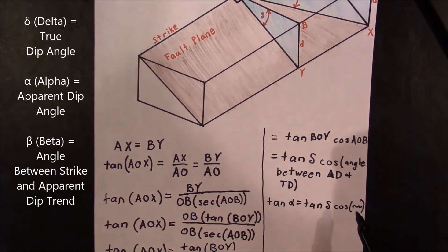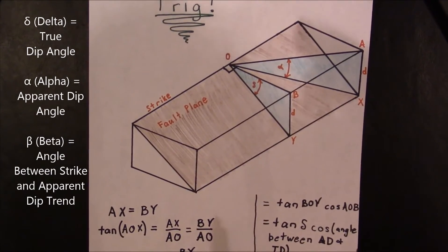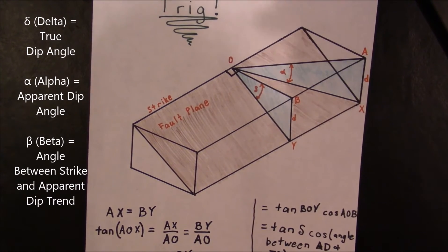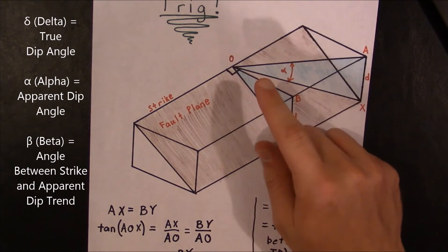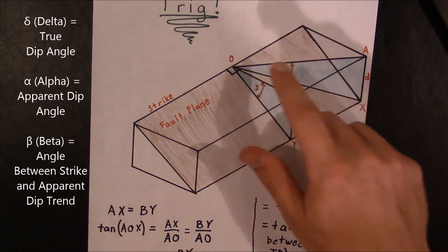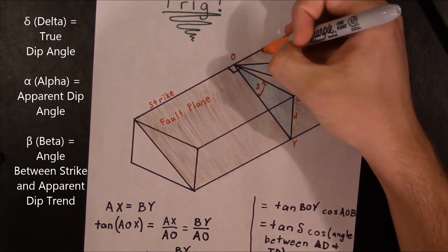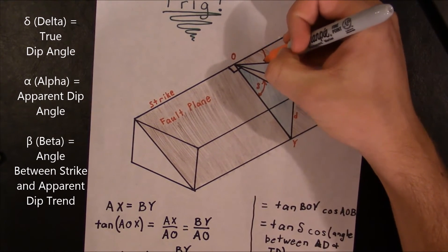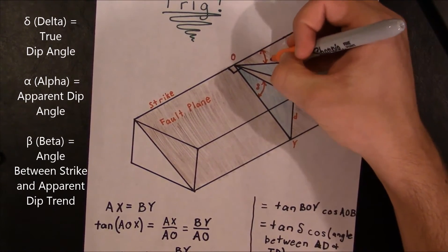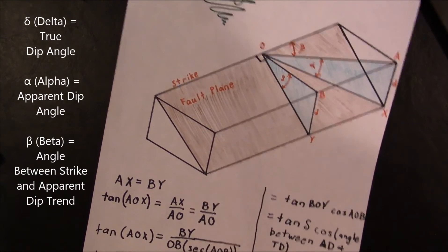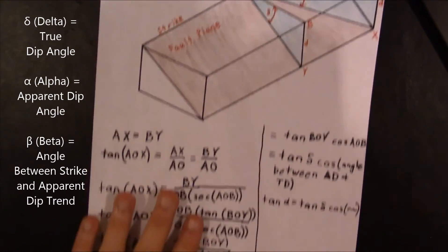However, what we do have a symbol for is beta. So if you recall from the last episode, beta is simply the angle between the strike of a plane and the trend of the apparent dip. So in this picture, beta would be the horizontal angle that goes right here. And that's beta.